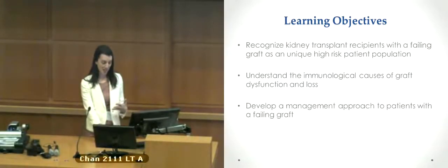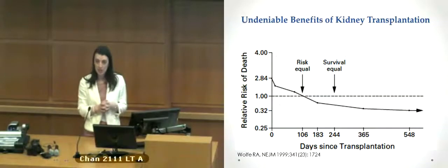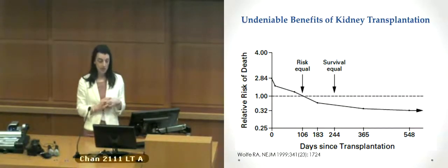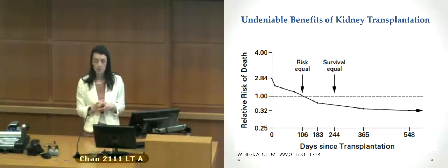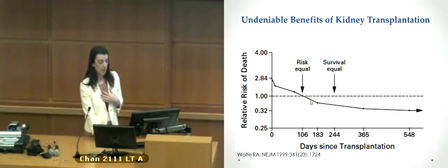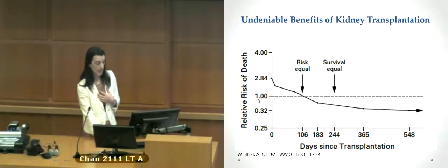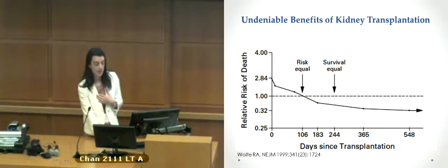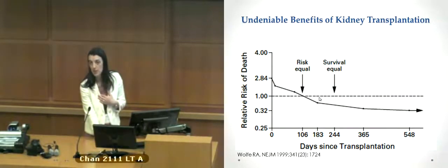I don't want to be negative today because transplantation is very beneficial to the majority of people with end-stage renal disease — it's the gold standard for renal replacement treatment. This slide is familiar to many people. If you look at people on the wait list for transplantation, initially at the time of transplantation there is an increased risk of death compared to those on the waiting list. But by about three months that risk is equalized, and from then onwards the survival benefit of transplantation remains. So that's important to keep in mind.